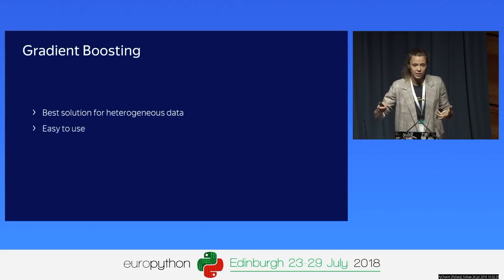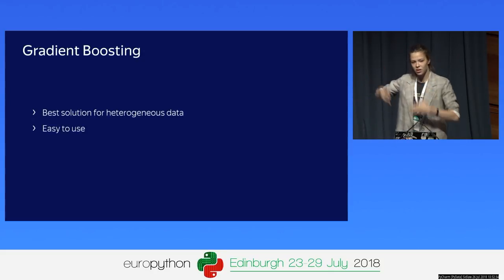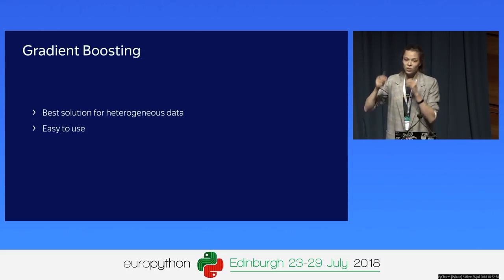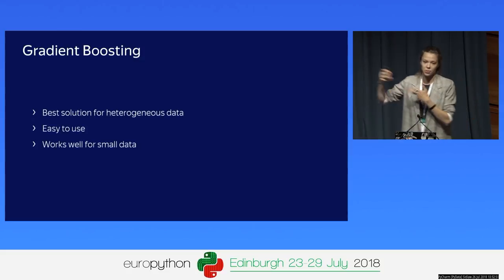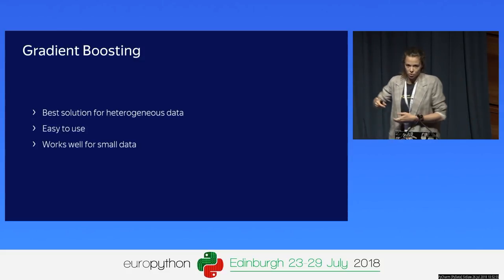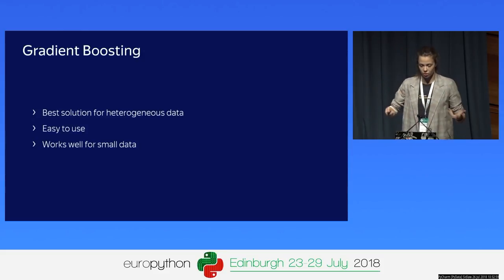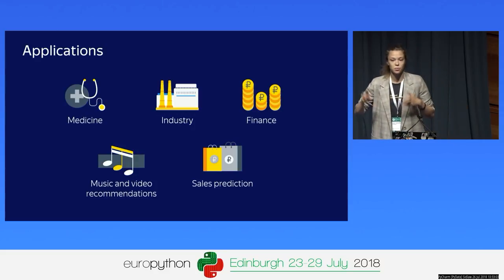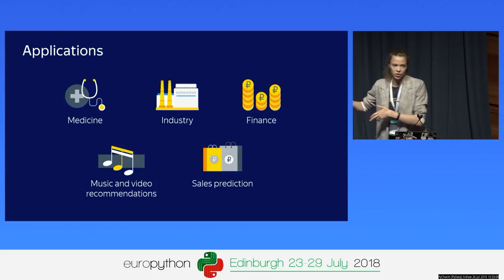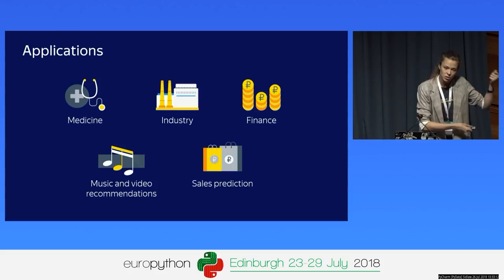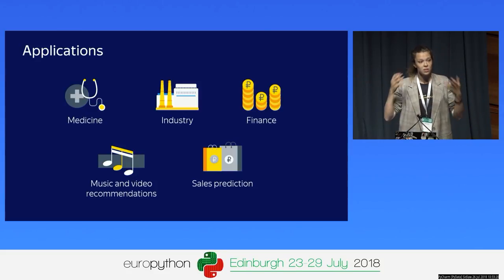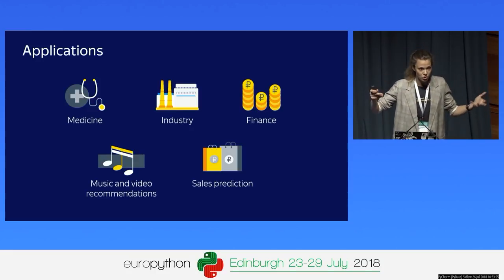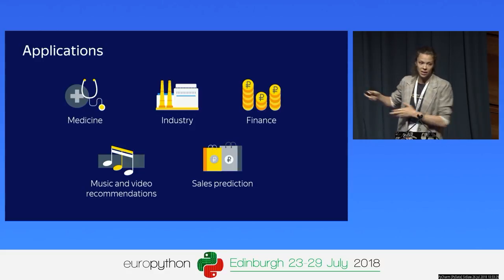Gradient boosting is also very easy to use. You can use it as a black box model — you give it your data, it trains the model and gives you a good result. You cannot do that with neural networks because you really need to be an expert to build a good architecture. It also works well if you don't have a lot of data. Because of this whole set of reasons, it's used in production in many companies: finance for credit scoring, recommendation systems for music, sales predictions, and heavily on Kaggle where winning solutions are often based on gradient boosting.